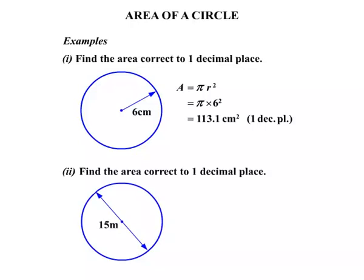Example two: Find the area correct to one decimal place again. Now, this is a little bit different. Let's write the formula down to start with though: π times radius squared.